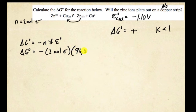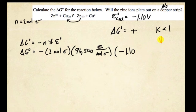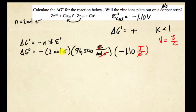Faraday's constant is 96,500 coulombs per mole of electrons. What Faraday found is how much coulombic charge is inside 1 mole of electrons — so if 1 mole of electrons moves, this is the charge that passes through the wire. Then we use our voltage of negative 1.10 volts. A volt is equal to joules per coulomb, and this is important because when I put that unit in, the coulombs cancel and the moles cancel, so my overall unit for free energy is going to be in joules, not kilojoules.